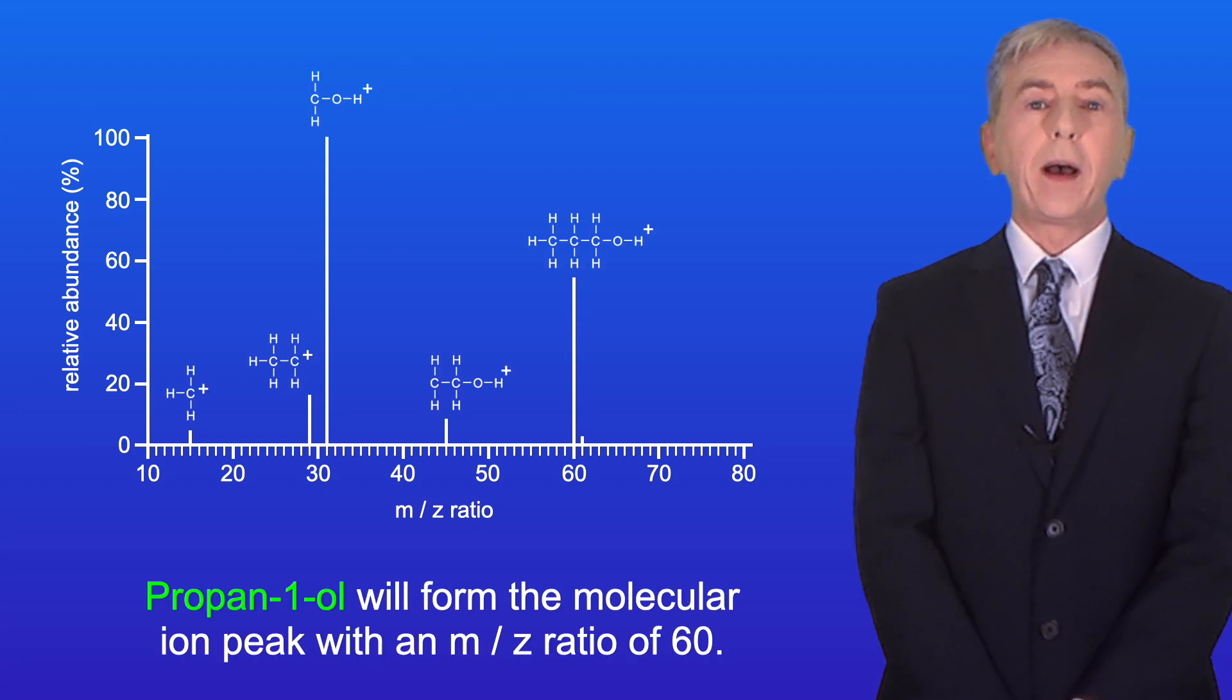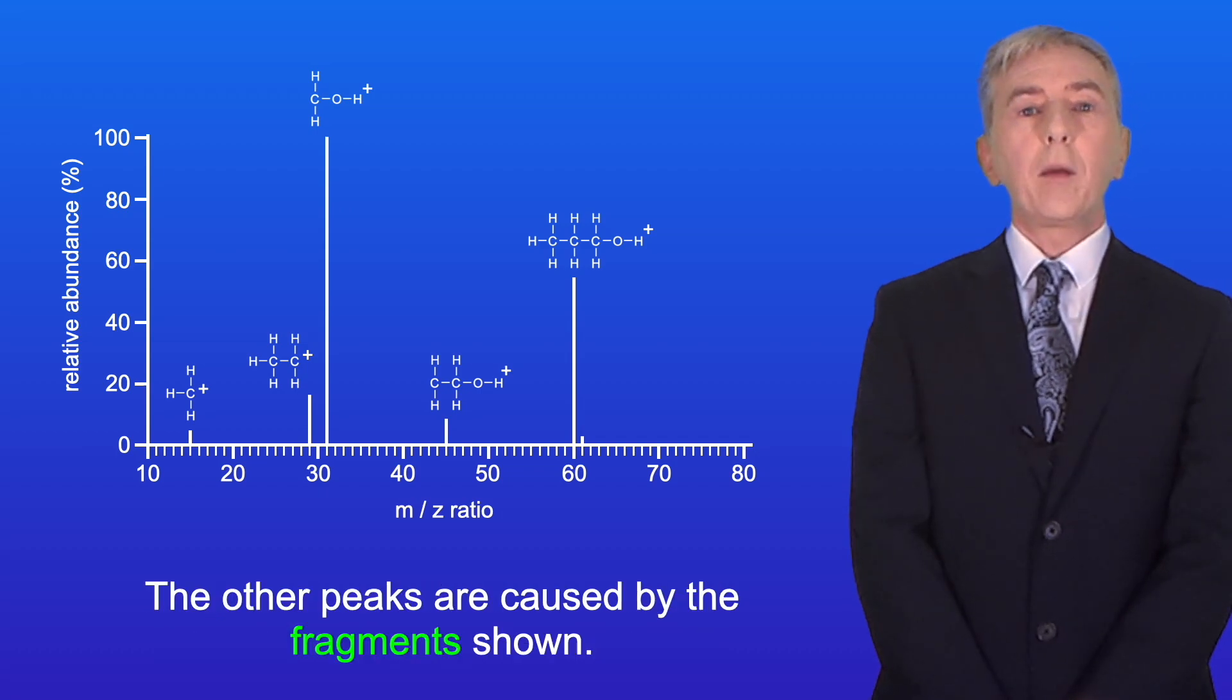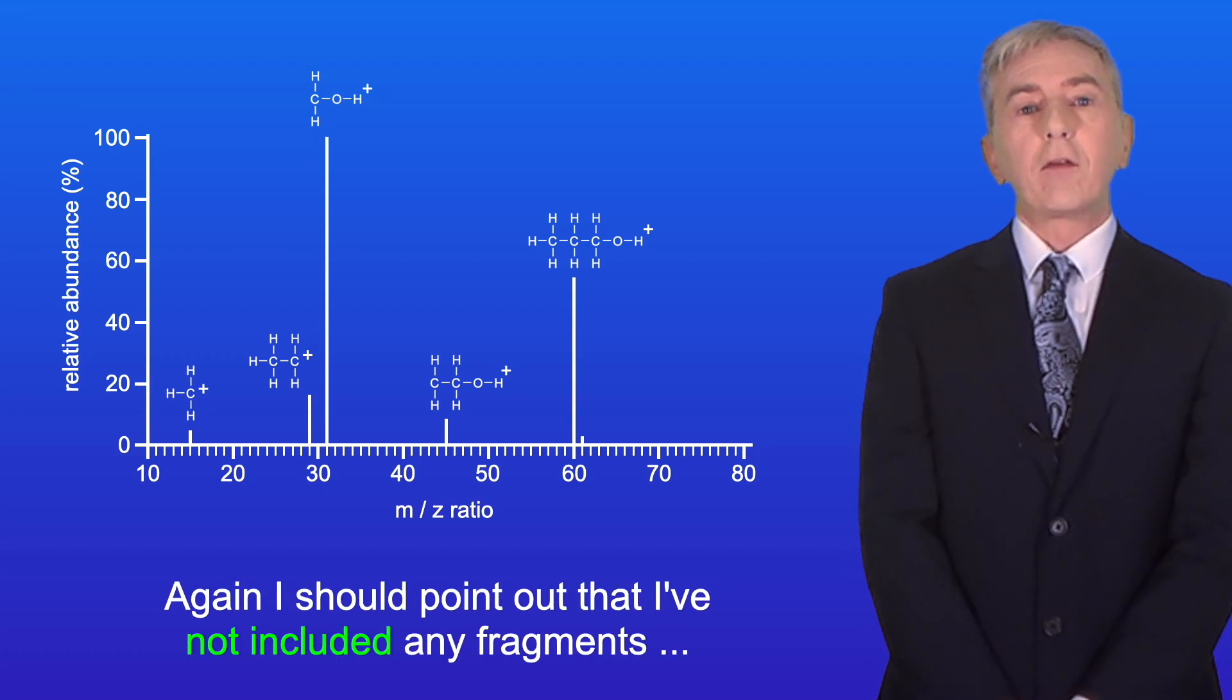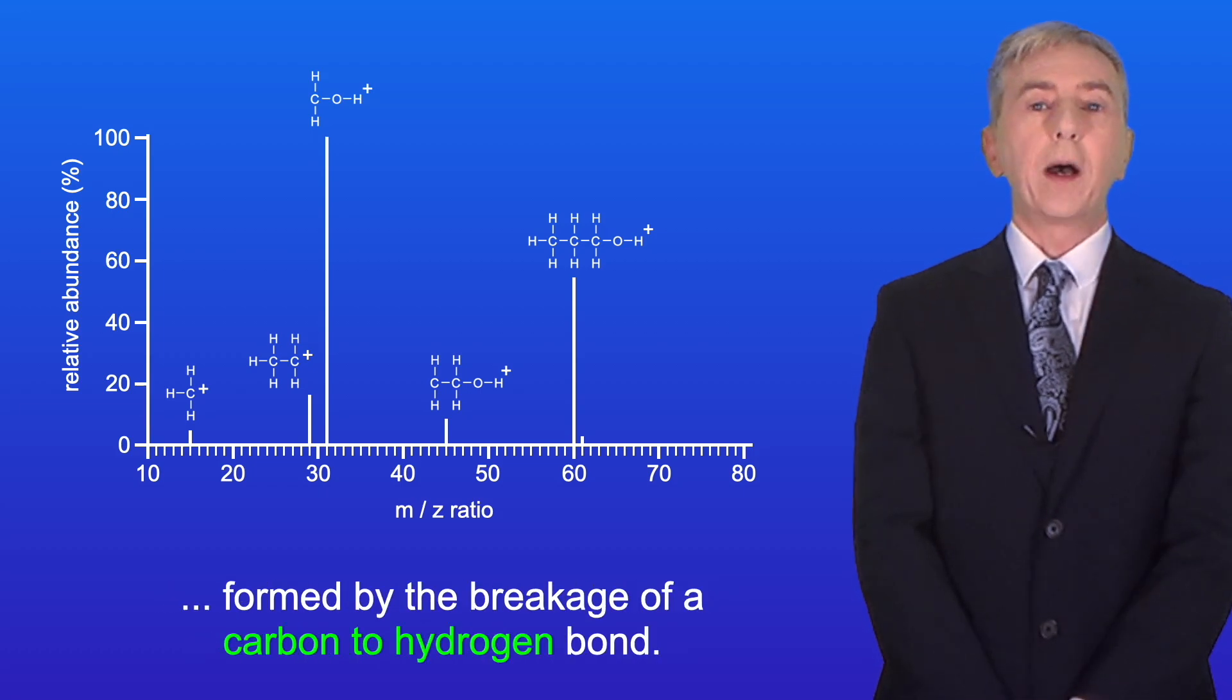Okay so propan-1-ol will form the molecular ion peak with an m/z ratio of 60. The other peaks are caused by the fragments shown. Again I should point out that I've not included any fragments formed by the breakage of a carbon to hydrogen bond.